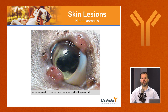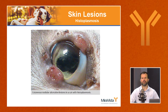Cutaneous lesions are nodular and ulcerative, often mucocutaneous around the eyes, with the head and neck most commonly affected, though they can occur anywhere. Dogs and cats can also develop oral lesions that are typically ulcerative and raised, and can mimic oral neoplasia.